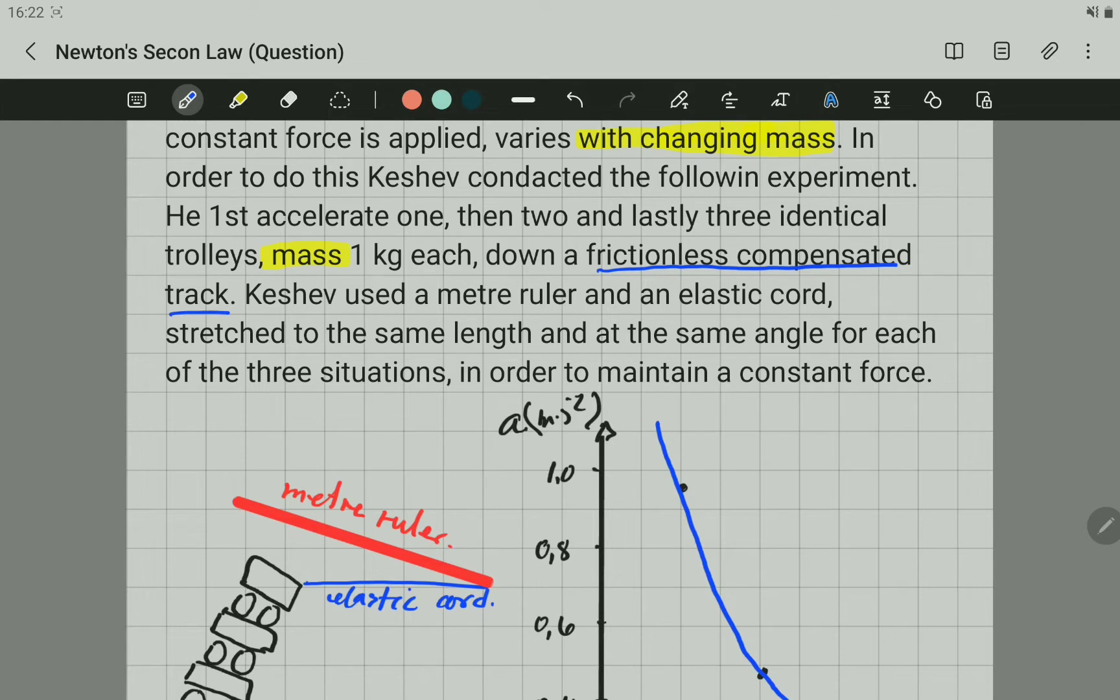Kichev used a meter ruler and an elastic cord stretched to the same length and at the same angle for each of the three situations in order to maintain a constant force. So force was kept constant.